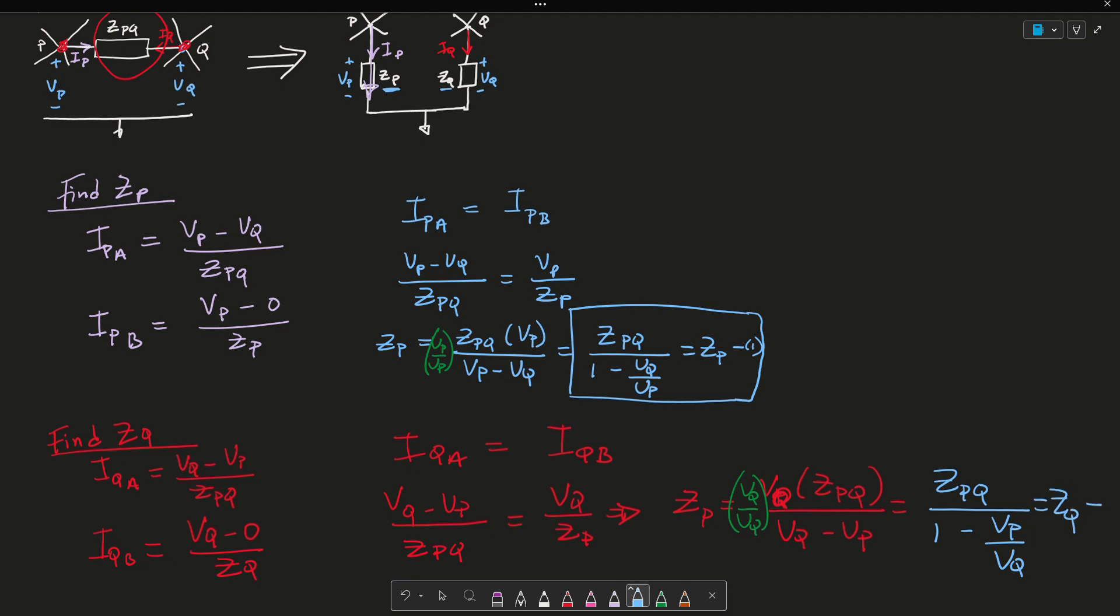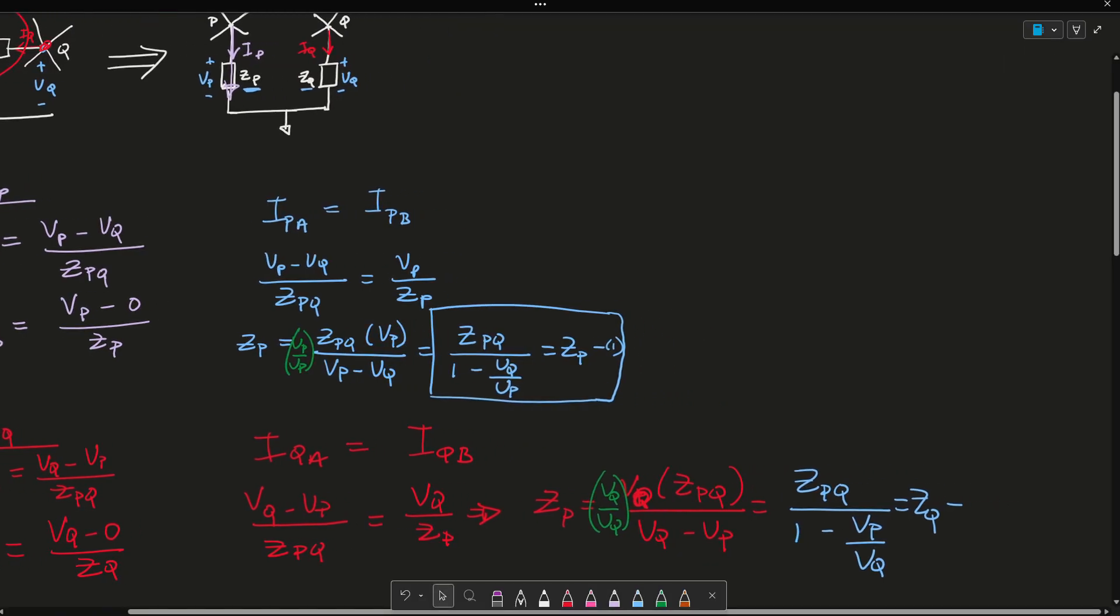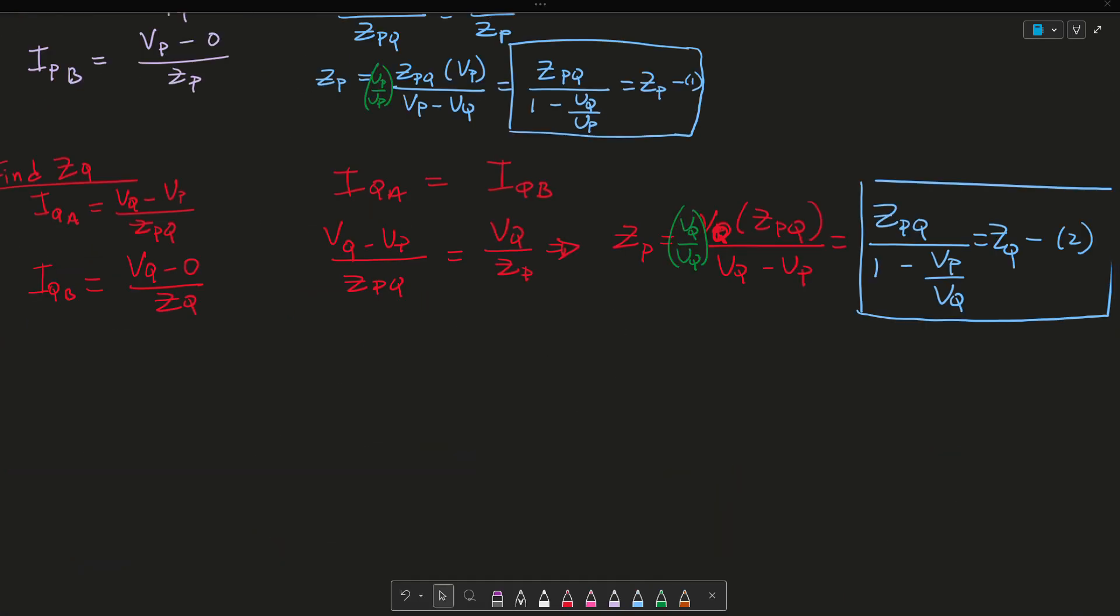If I multiply top and bottom by VQ, what I obtain is ZPQ over 1 minus VP over VQ. And this equals ZQ, or this is my equation number 2.